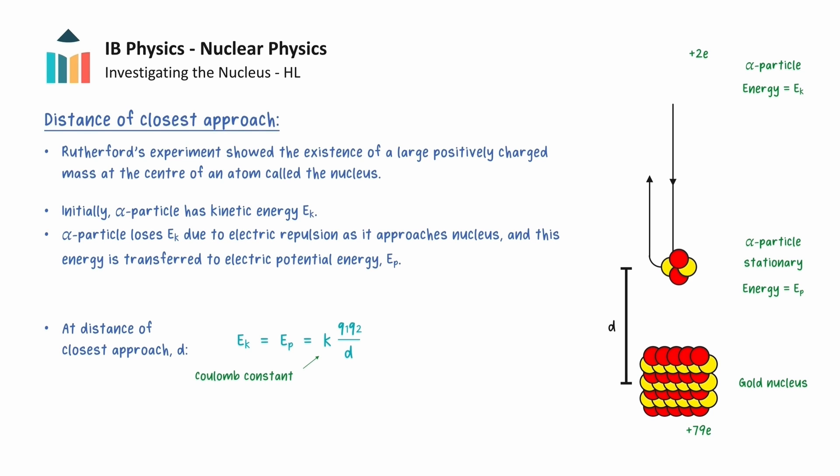Where K is the Coulomb constant, Q1 and Q2 are the charges of the alpha particle and nucleus, and d is the distance between their centres. Then we can rearrange to get an equation for the distance of closest approach as follows.